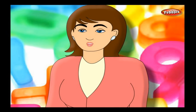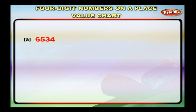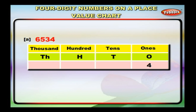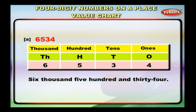Now, let us try some examples. Let us arrange these four-digit numbers in the place value chart and write their number names. For 6,534: write four in the ones column, three in the tens column, five in the hundreds column, and six in the thousands column. We have six thousands, five hundreds, three tens and four ones. We write it as six thousand, five hundred and thirty-four.